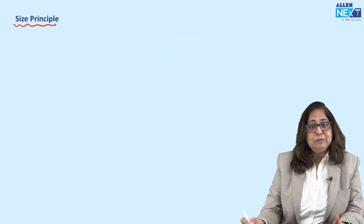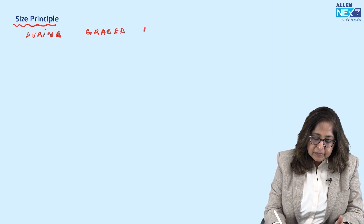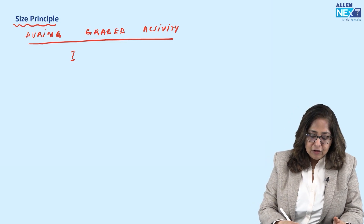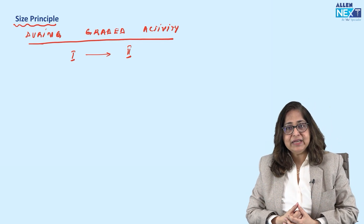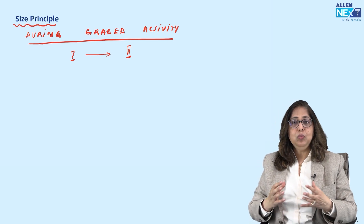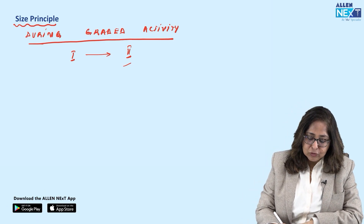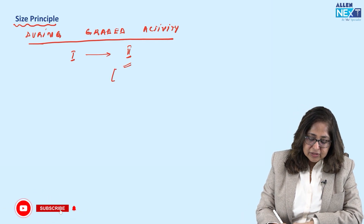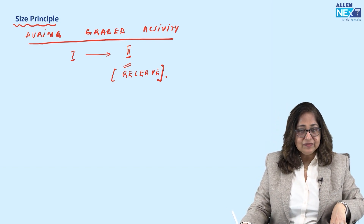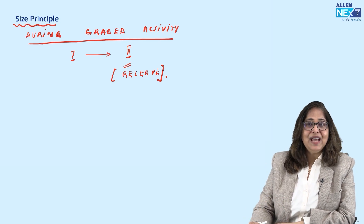There is something known as the size principle. This states that during a graded activity, type 1 fibers are recruited first, followed by type 2. When a muscle begins any graded activity, it uses the slow, smaller, weaker fibers first. If it can overcome the load with type 1 fibers, fine. But if it needs extra power and strength, it uses the type 2 fibers. So type 2 fibers are the reserve in muscle contraction. During graded activity type 1 is used first; type 2 is recruited if required.